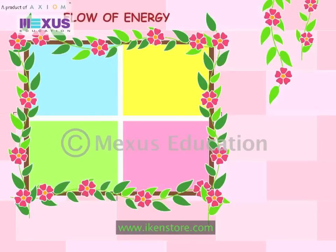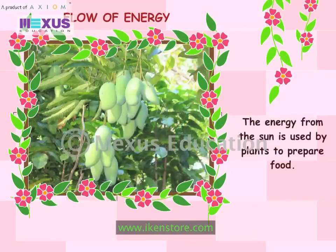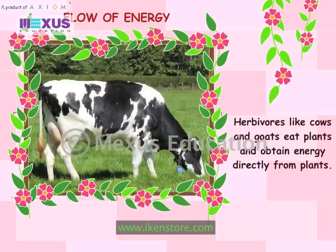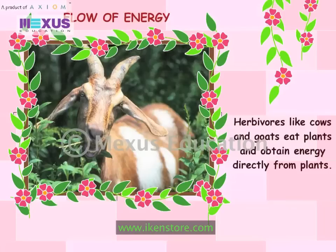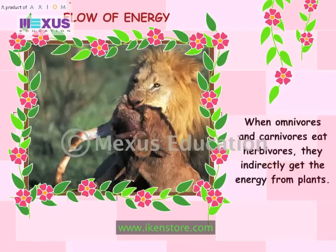The sun is the main source of energy. The energy from the sun is used by plants to prepare food. Plants give us the energy we need to perform our activities. Herbivores like cows and goats eat plants and obtain energy directly from plants. When omnivores and carnivores eat herbivores, they indirectly get the energy from plants.